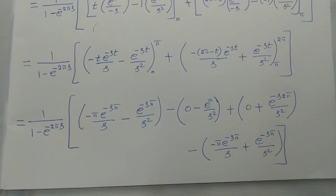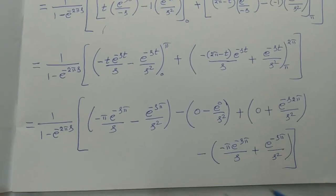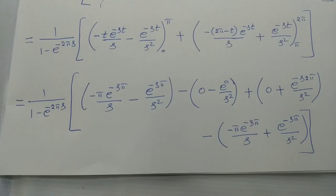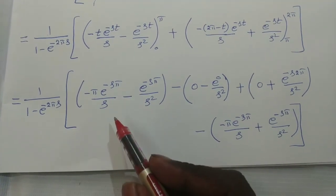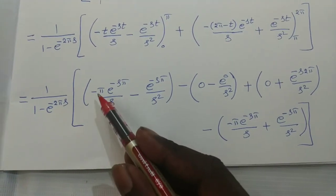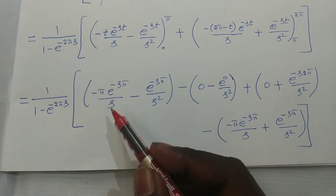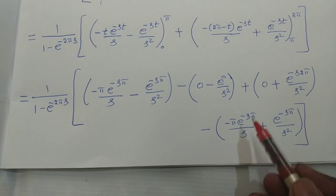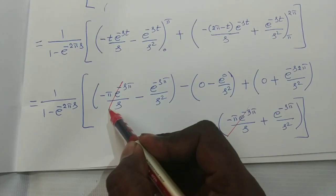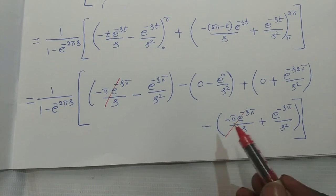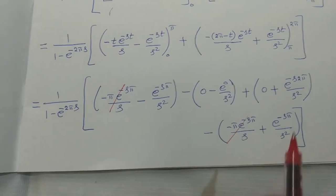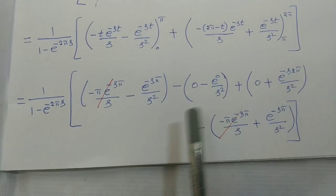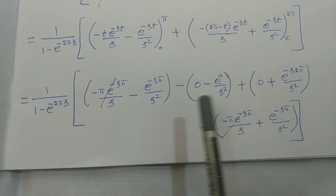Now simplifying: the term −π·e^(−sπ)/s from the first integral and +π·e^(−sπ)/s from the second integral cancel each other out, because one is negative and the other is positive.